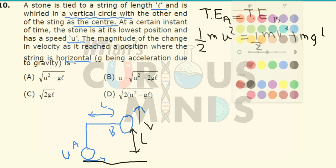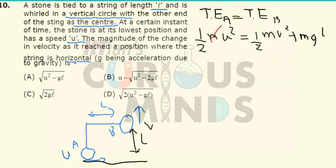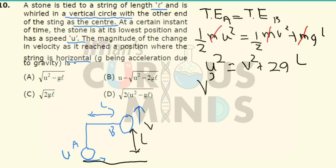M cancels out everywhere. Multiplying the whole equation by 2, we get U squared equals V squared plus 2GL. Therefore, V squared is equal to U squared minus 2GL. This is the velocity squared at the horizontal position.